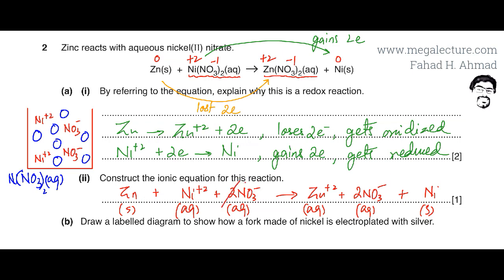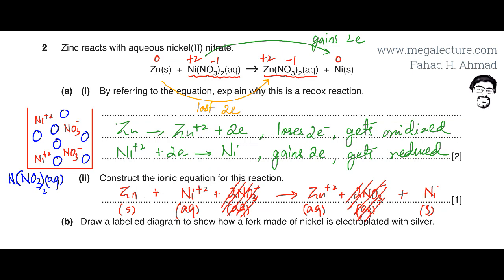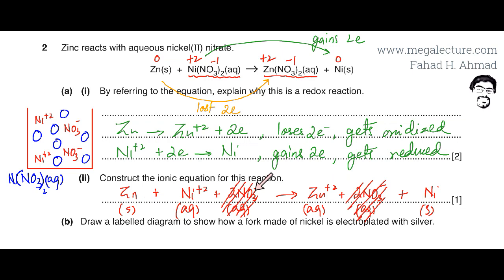Remove the spectator ions from both sides. The leftover equation is the ionic equation: Zn(s) + Ni²⁺(aq) → Zn²⁺(aq) + Ni(s). Without the nitrate ions, this is your ionic equation.